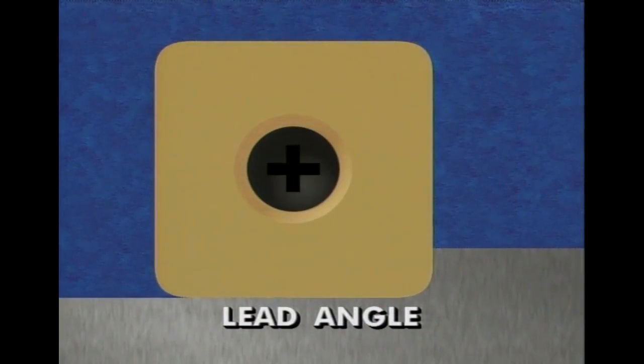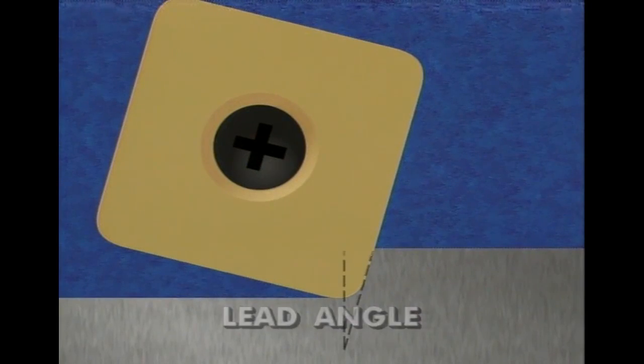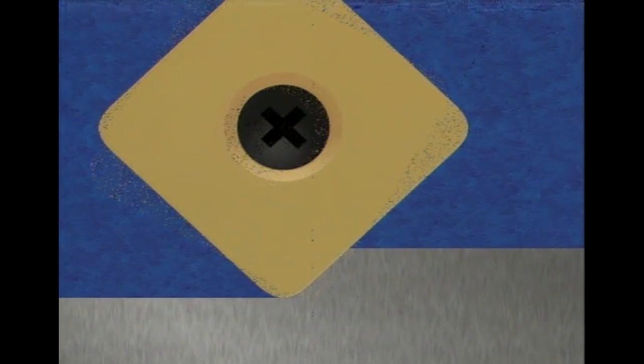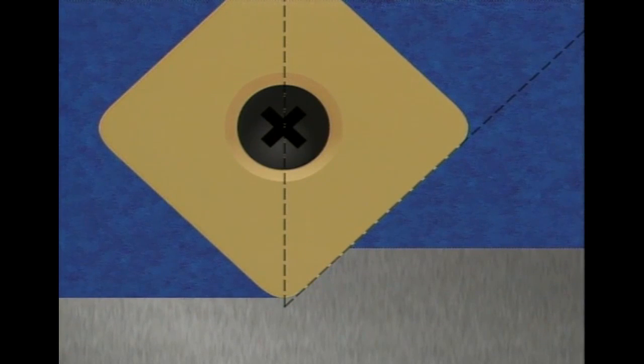The cutter's lead angle influences cutting forces and chip thickness. The greater the lead angle, the greater the axial force, and the longer but thinner the chip. Standard milling cutters come in zero, 15, 30, and 45 degree lead angles.